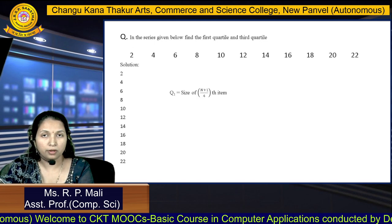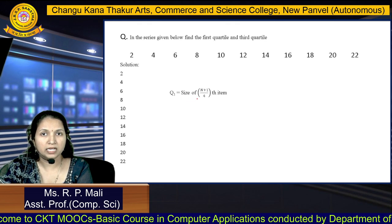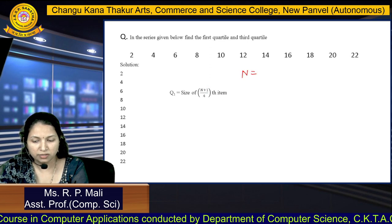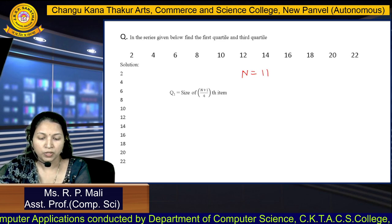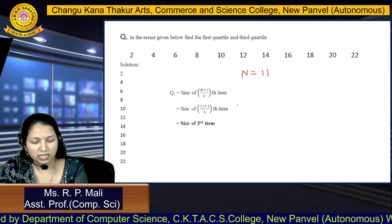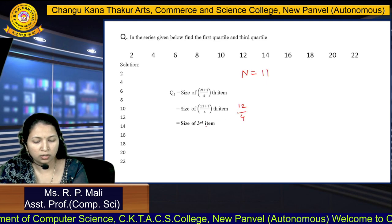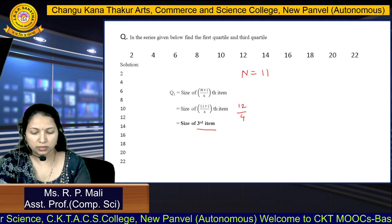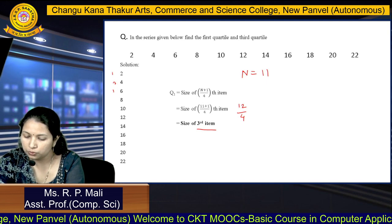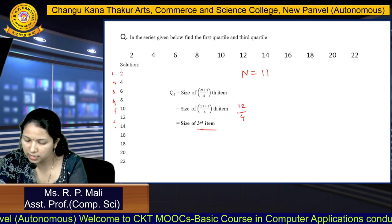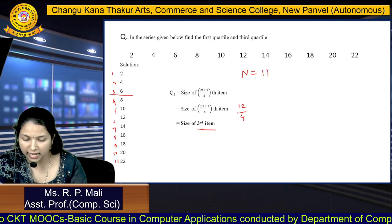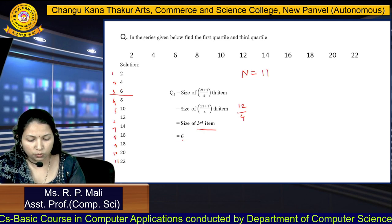First, we write down our formula for Q1. Q1 equals size of (n+1) divided by 4th item. Your n is the number of observations — there are 11 observations. So, 11+1 divided by 4 equals 12 by 4, which is the 3rd item. So Q1 will lie at the 3rd position. Counting through the data: 1, 2, 3, 4, 5, 6, 7, 8, 9, 10, 11 — at the third position, 6 occurs. So Q1 is 6.